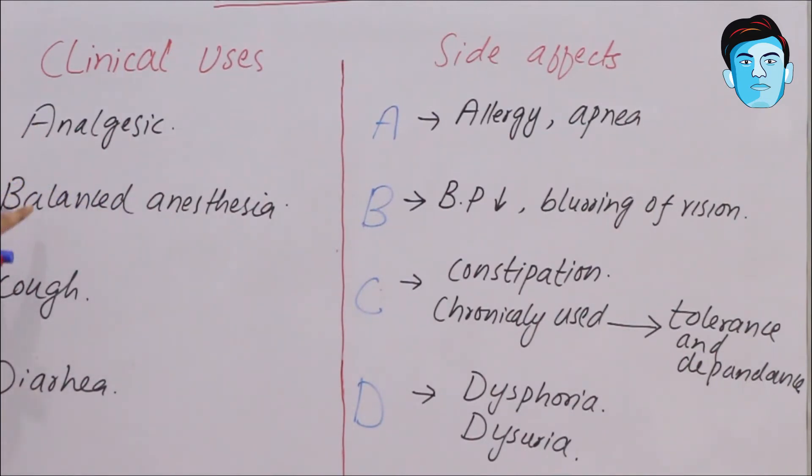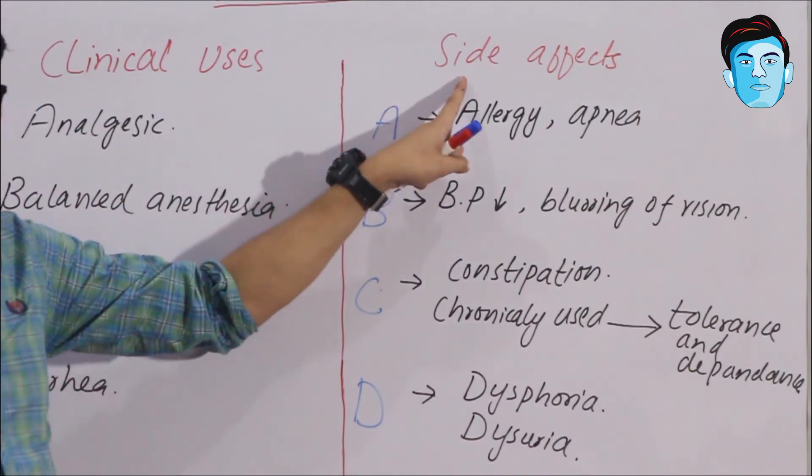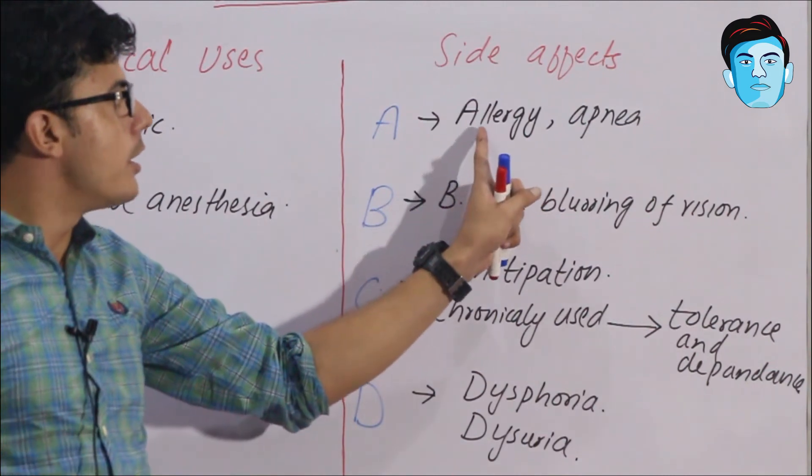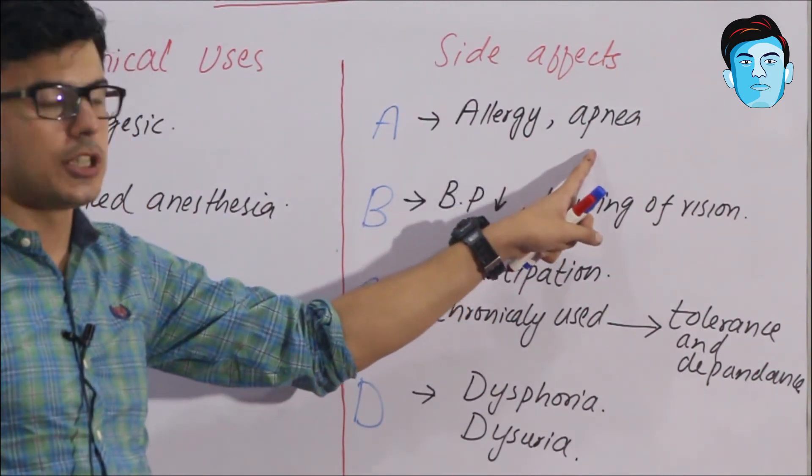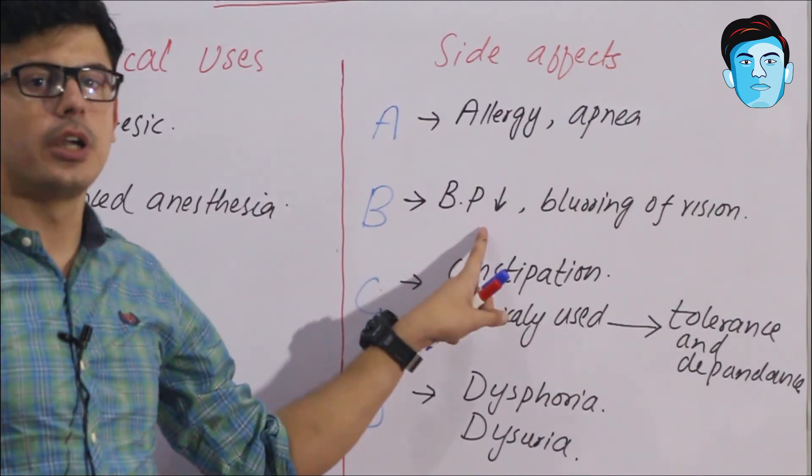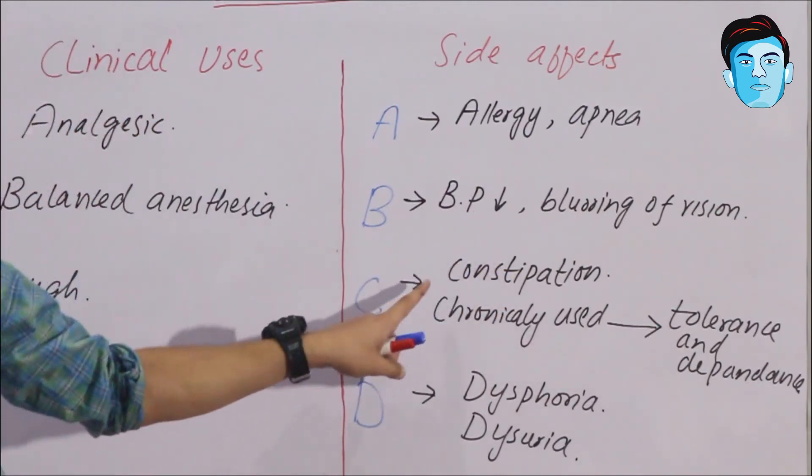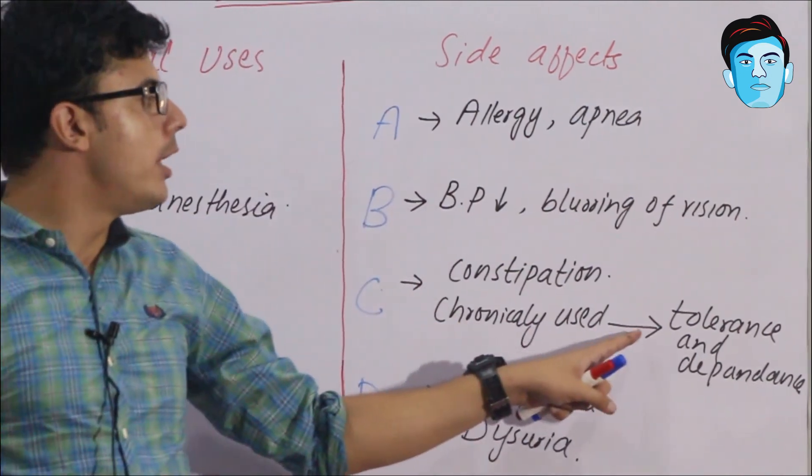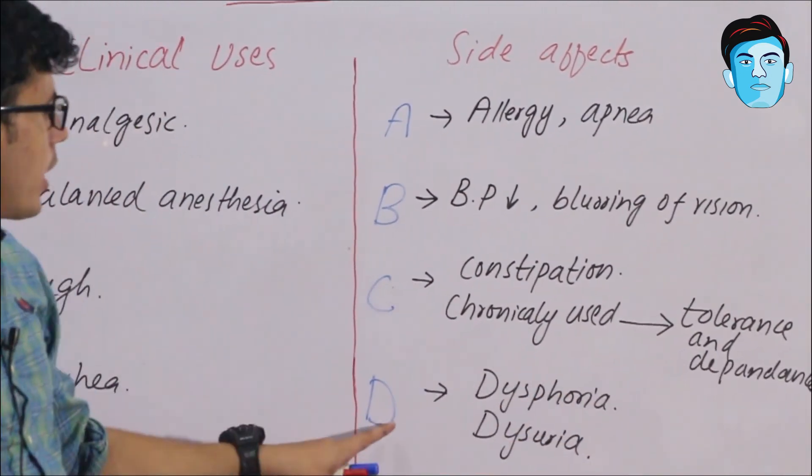To summarize: clinical uses are analgesic, balanced anesthesia, cough, and diarrhea. Side effects are allergy and apnea, BP decrease and blurring of vision, constipation with tolerance and dependence, and dysphoria and dysuria.